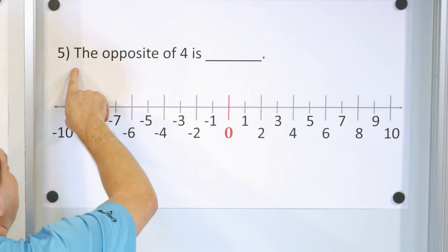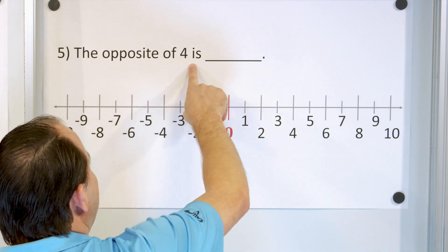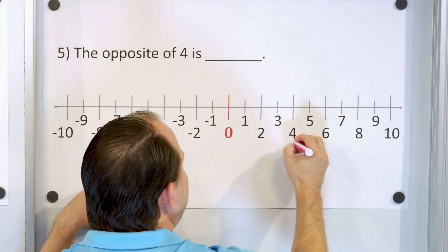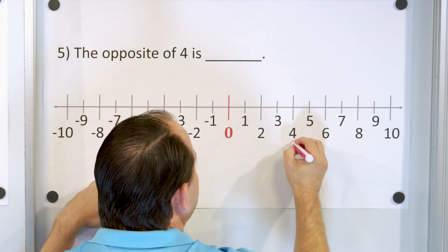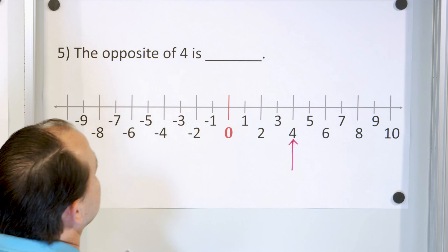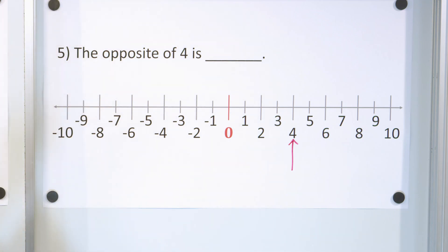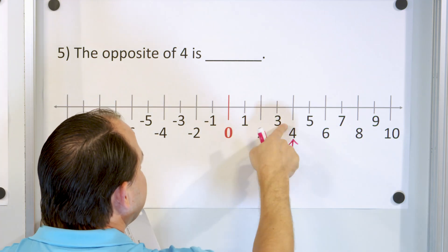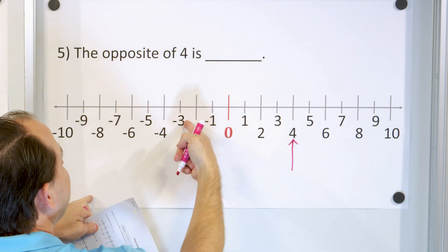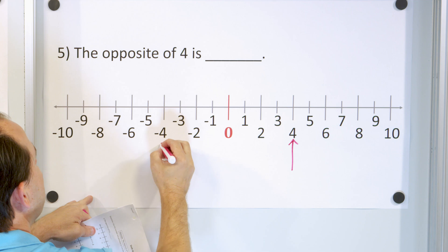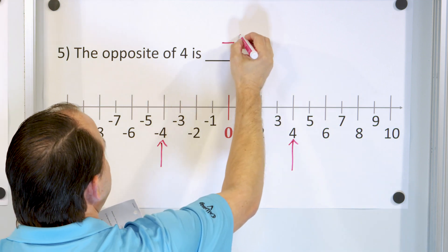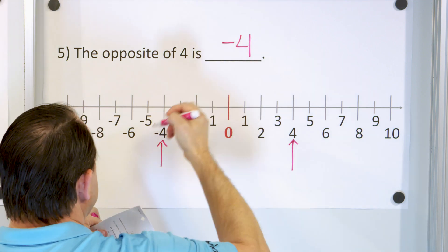So let's ask ourselves, what is the opposite of four? If we had four right here, that's four units away. We go four units this way, which would be negative four. So the opposite of four is negative four.